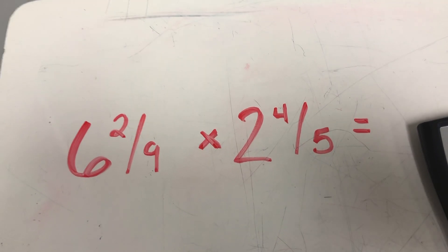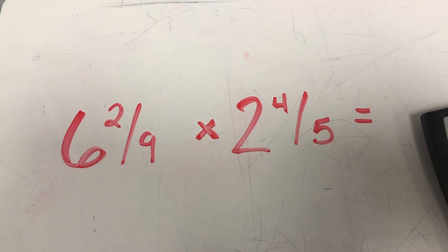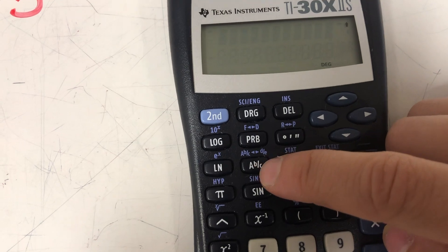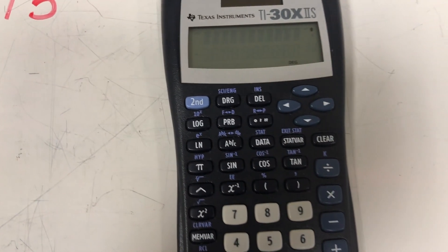For our second example, we're going to practice some mixed numbers. So we have six and two-ninths times two and four-fifths. Our calculator is super smart. We're going to use that same fraction button, that ABC button to enter this.